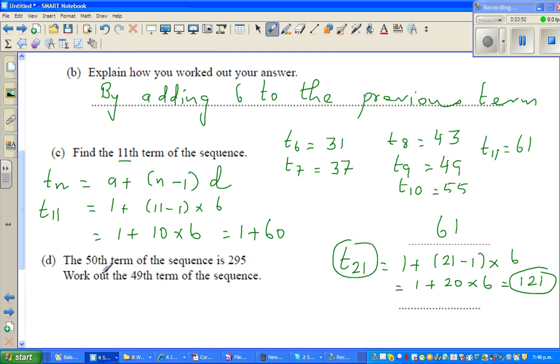Now, the 50th term is, so they are telling us, T50 is 295. So the question is, what is your T49? So you go backwards, that is 295 minus 6, which is, you first take away 5, which is 290. So this is 289.